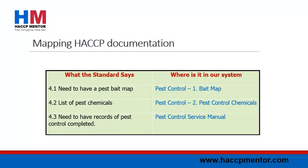When you have multiple requirements or standards that you need to comply with, I would recommend having a mapping document for each standard. If you write and number your system to one standard, it can become troublesome in the future when other standards or customer requirements are required by your business. Setting up your HACCP food safety documentation logically in the first place will make this whole process a lot easier.